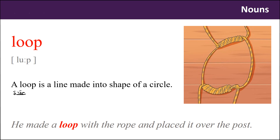Loop. A loop is a line made into the shape of a circle. He made a loop with the rope and placed it over the post.